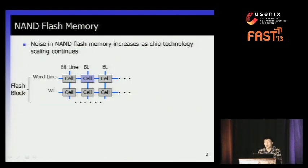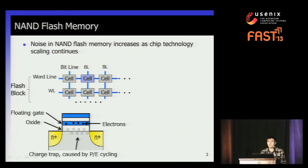Unfortunately, meanwhile the noise in NAND flash memory becomes more severe. Here is the basic organization of NAND flash memory. The flash cells are connected by bit lines and word lines, and a block consists of several word lines. For a single flash cell, this is called a floating gate transistor. Electrons are trapped in the floating gate and change the threshold voltage of the transistor, which determines the data stored. Under the floating gate is an oxide layer with many charge traps caused by continuous program-erase cycles, which is why a flash cell wears out after too many PE cycles.